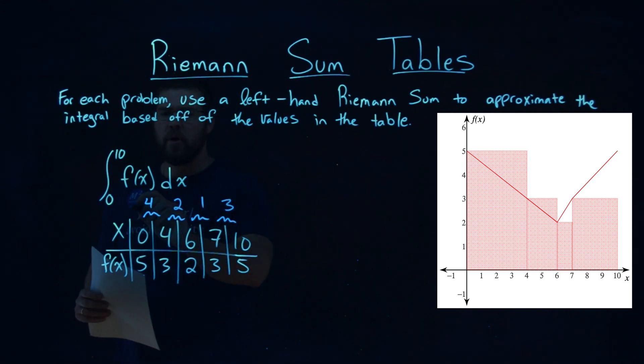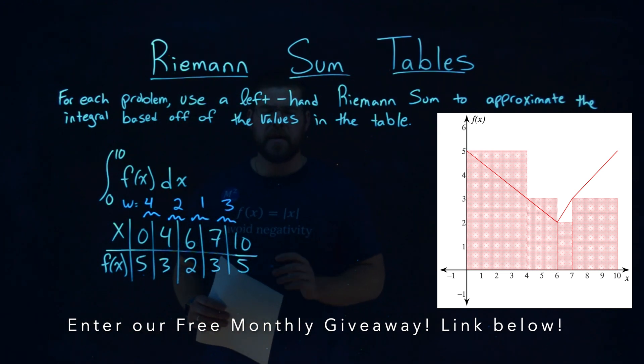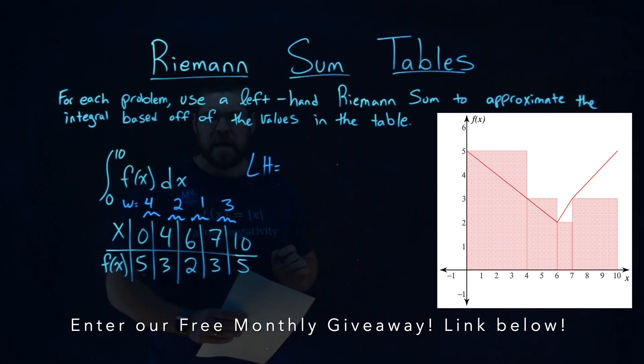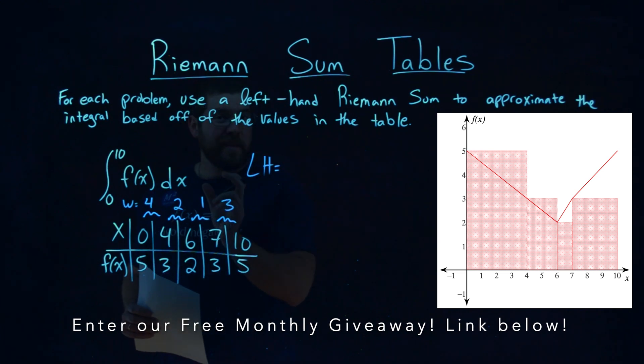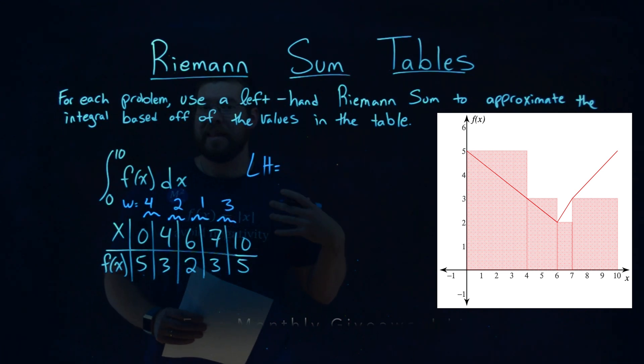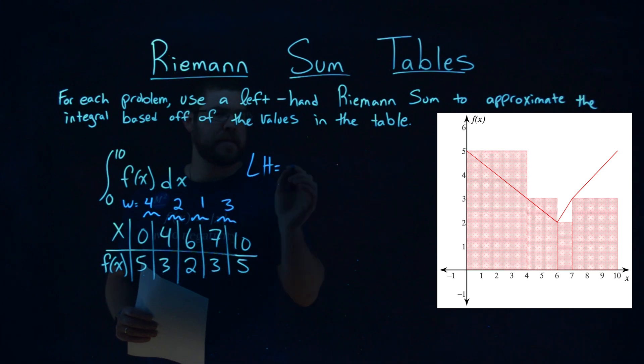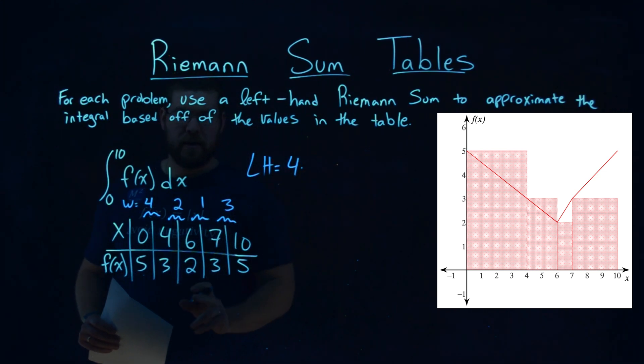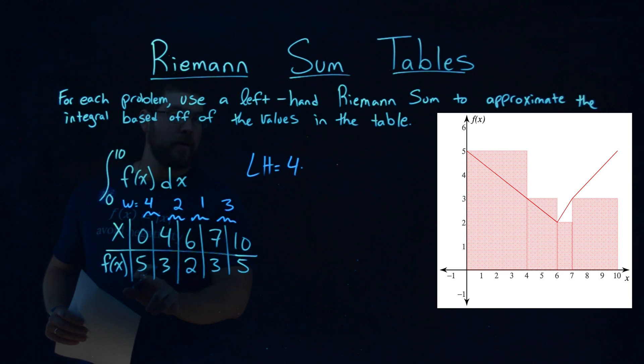So we have our width right here for each rectangle. Now we want to do a left-hand Riemann Sum, and so we need to take the width of each rectangle times the height. And so our width for the first rectangle is a width of 4, but its height, since it's left-hand, we use the left value, left y value of that rectangle, and left height is a 5.